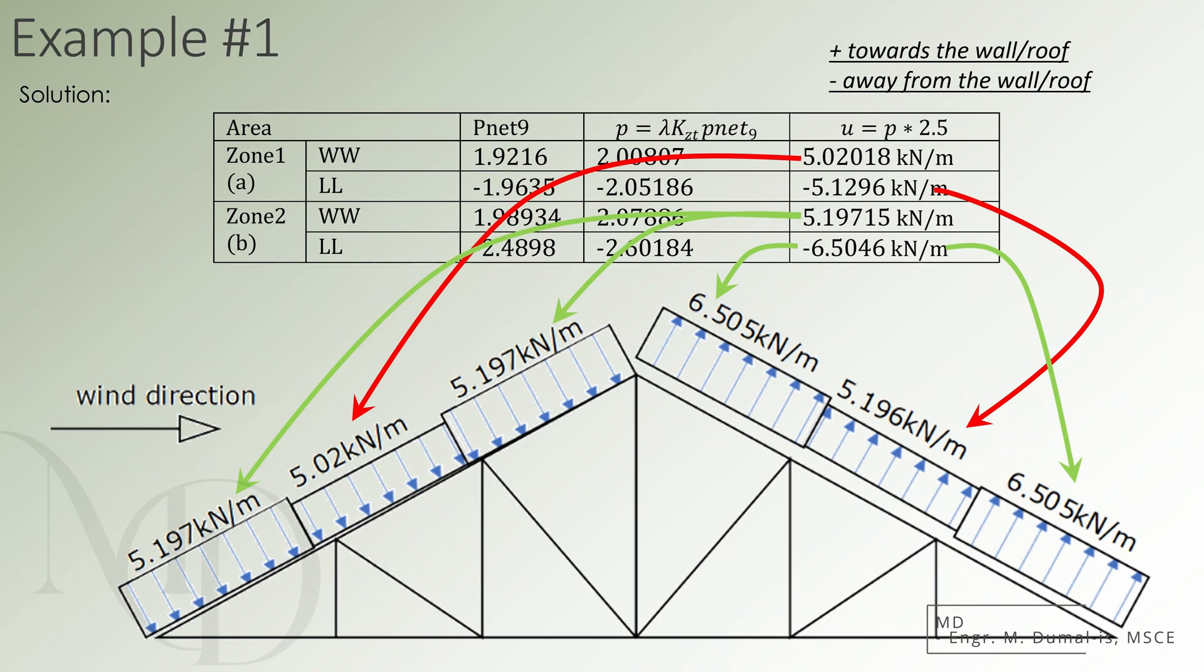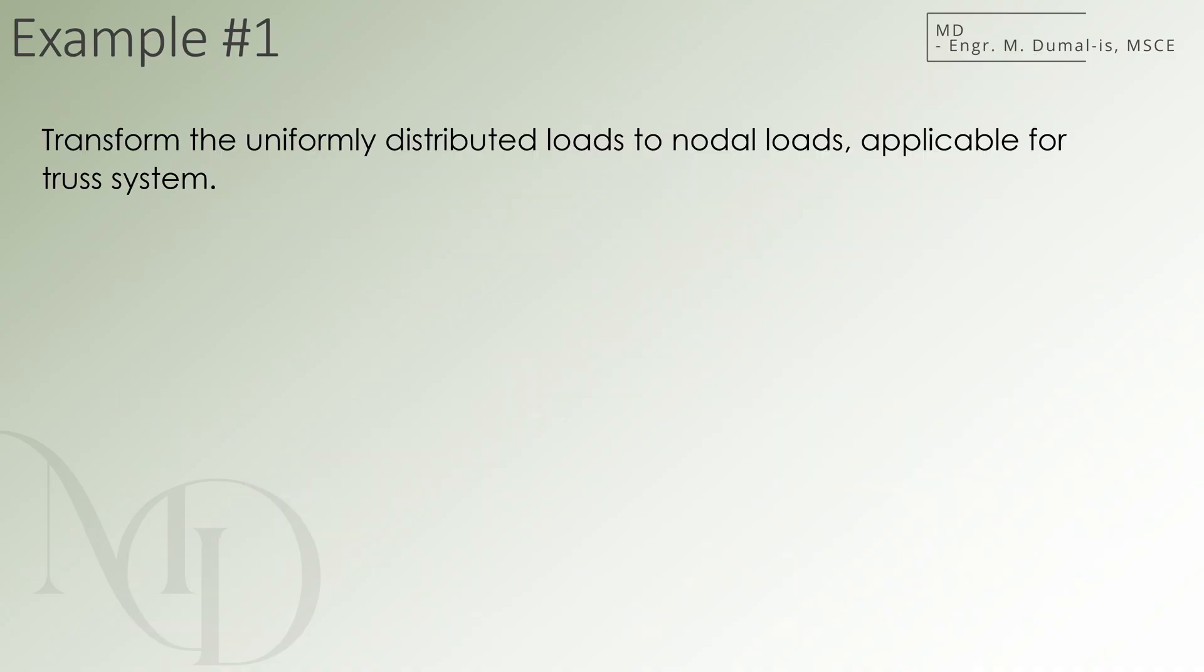We now apply the loads onto the truss as shown. Notice carefully the orientation or direction of the forces. As a simple rule of thumb, positive pressure is directed towards the component or wall and acts perpendicular to its surface, while negative pressure is also perpendicular but directed away from the wall or component.